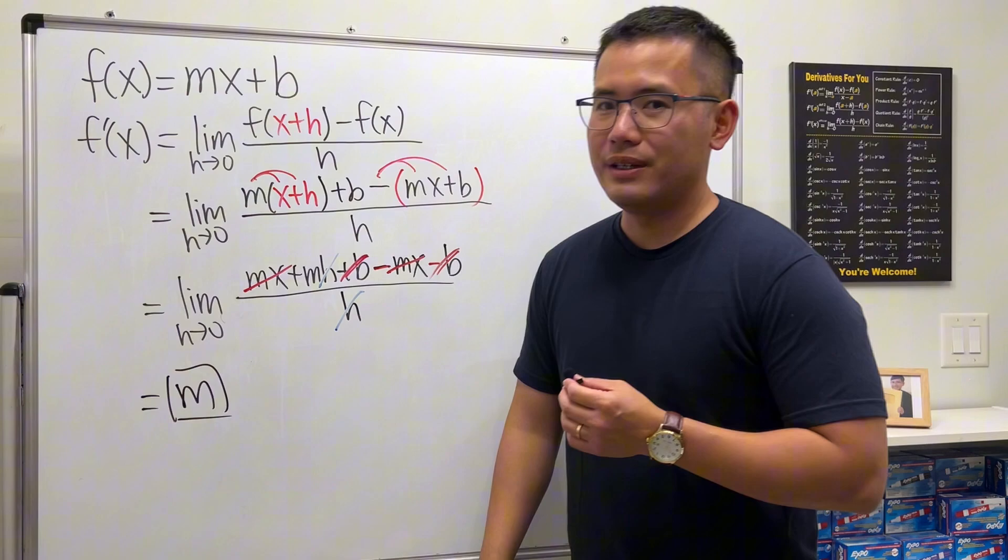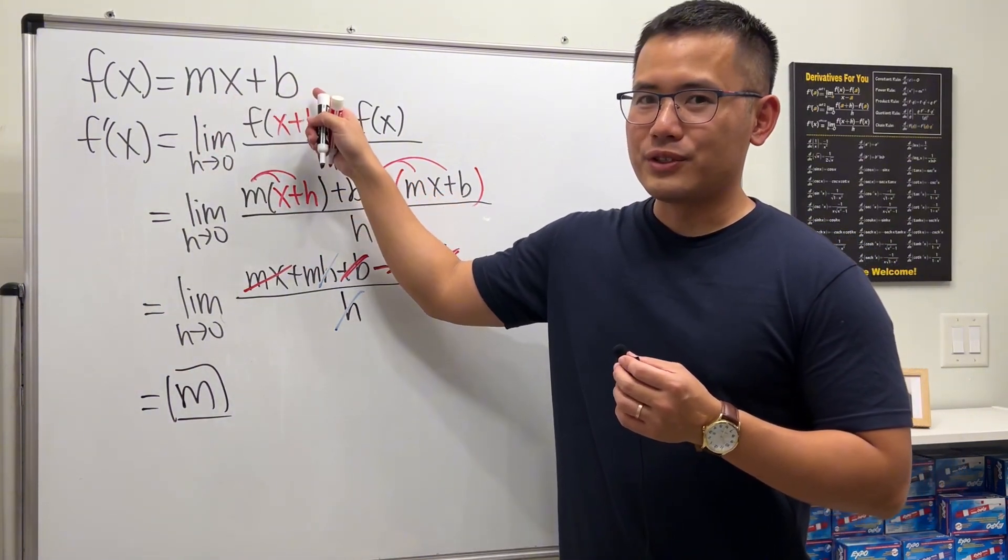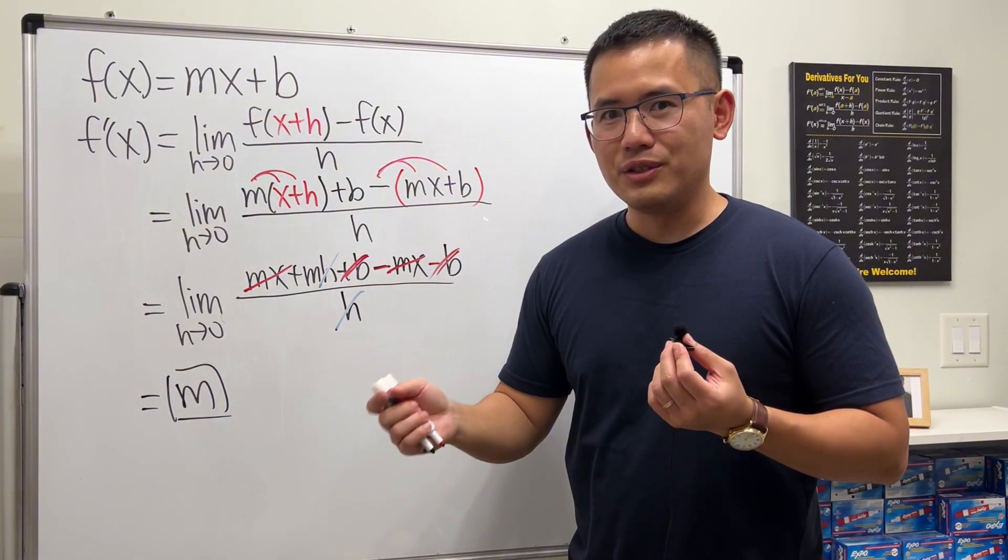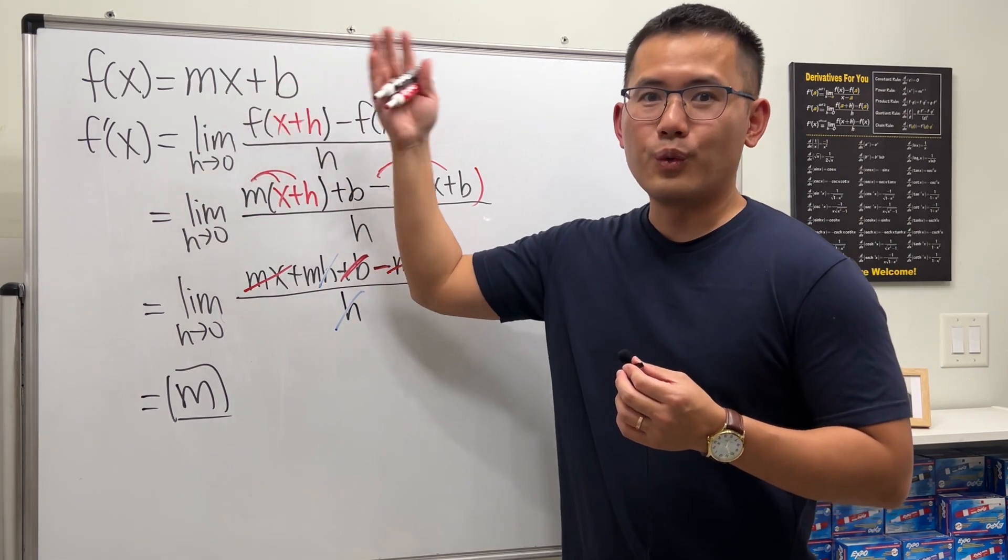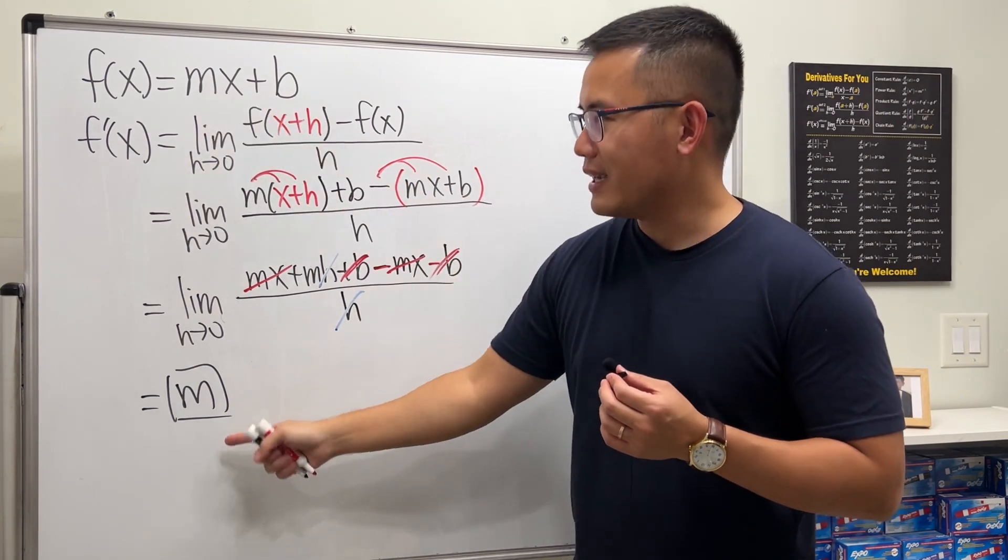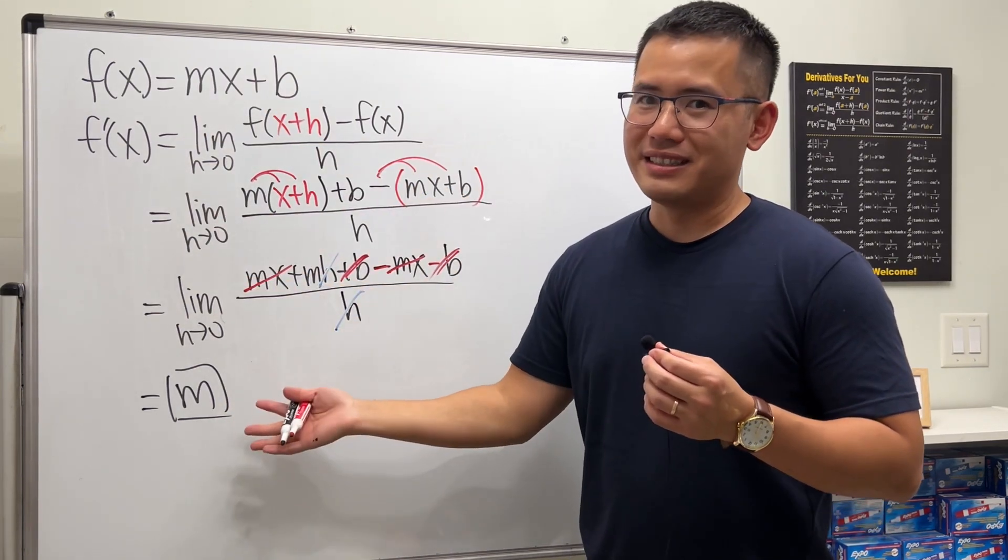And in fact, if you think about it, this is the linear function. And the derivative is just the slope of the tangent line. But this is a line already. What's the slope of this? m. That's why the derivative is just m and nothing else.